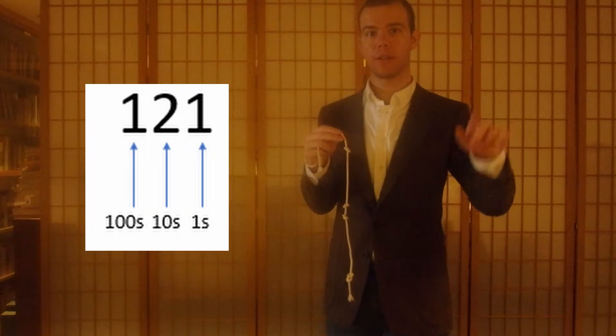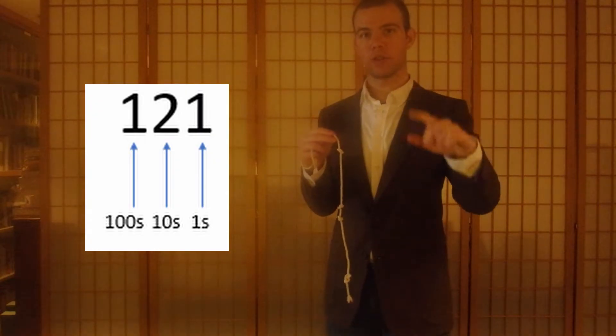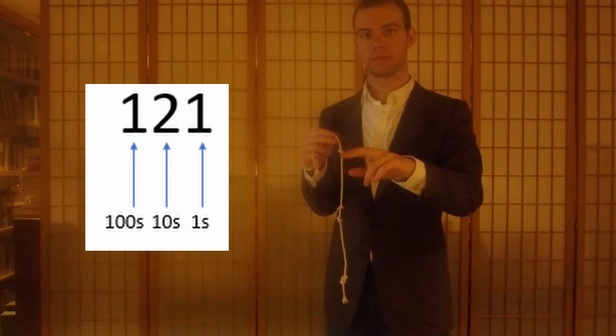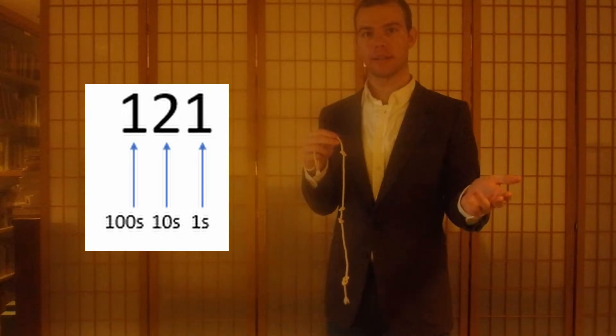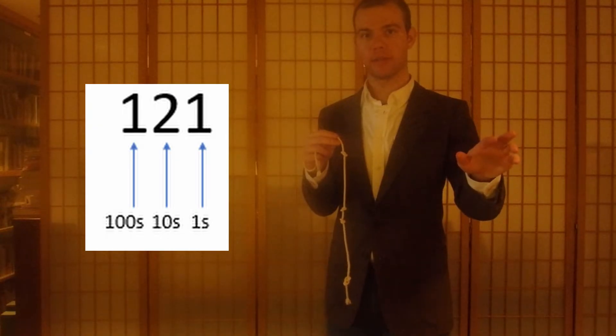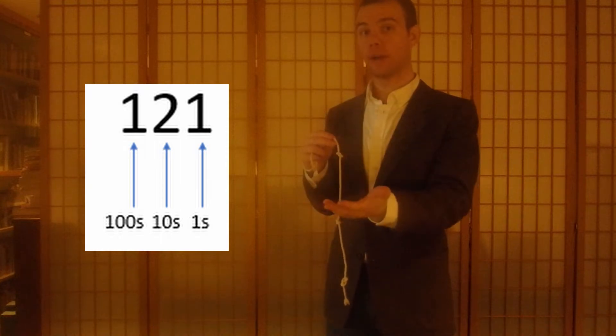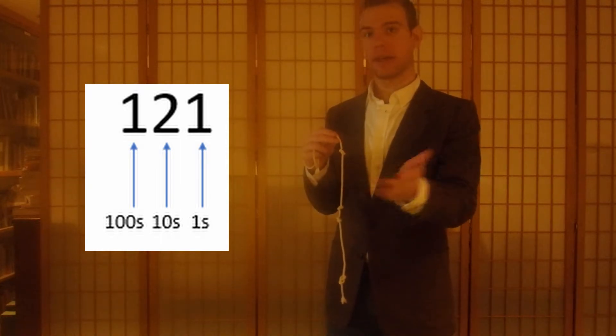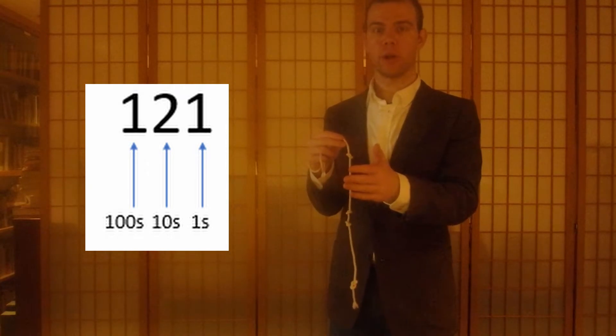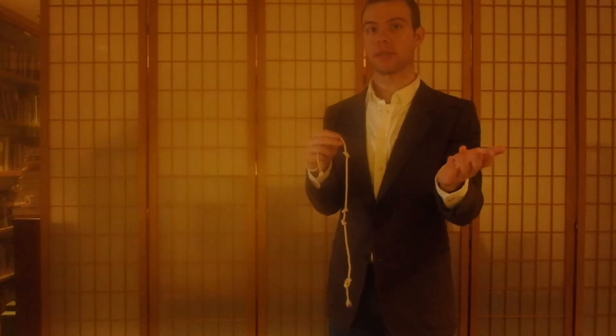If I want to write the number 121, I would write 1 followed by 2 followed by 1. This means I have 1 in the hundreds place, 2 in the tens place, and 1 in the ones place. That means 121 in our system of writing numbers.